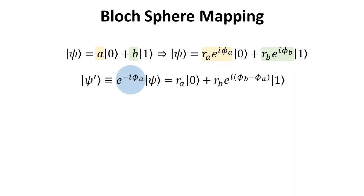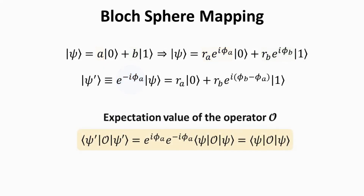Now consider the qubit psi-prime, which is the original qubit multiplied by a complex phase e to the minus i·phi_A. A complex phase that can be factored out is called a global phase. We will show that for all meaningful physical processes, a global phase can always be disregarded and only the relative phases of A and B matter. Consider the expectation value of any operator O with respect to qubit psi-prime. We can easily show that it is exactly equal to the expectation value of O with respect to qubit psi. Thus, the global phase does not alter the operator's expectation value, which are the quantities that can be measured.